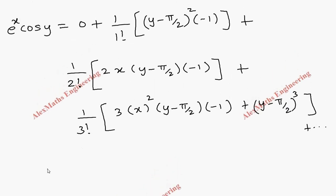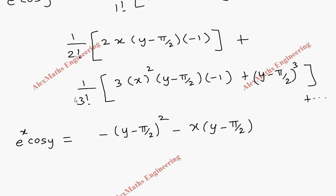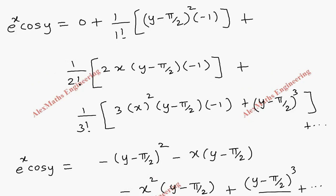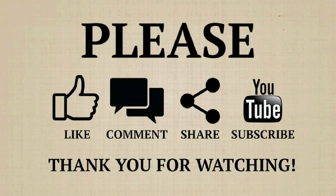Let's rearrange this. e^x·cos y equals −(y − π/2) minus x·(y − π/2) minus x²·(y − π/2)/2 plus (y − π/2)³/6, and so on. Note: the earlier term had y − π/2 (not squared). So we have completed the Taylor series expansion.